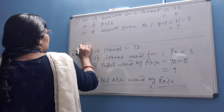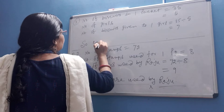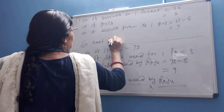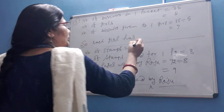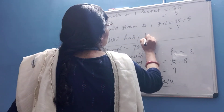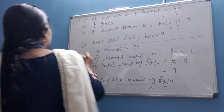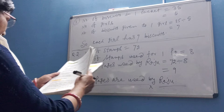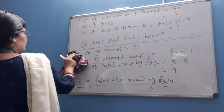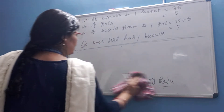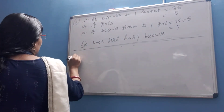Each girl has 7 biscuits. Next, question number 4. Rahul can type 32 pages in 8 hours. How many pages can be typed in 1 hour?